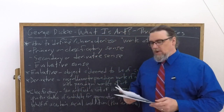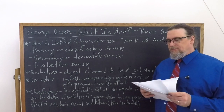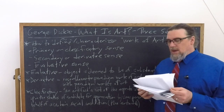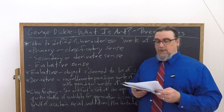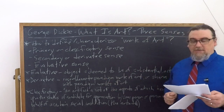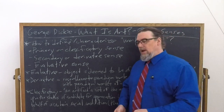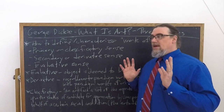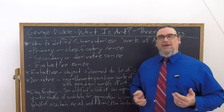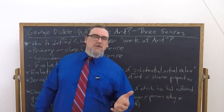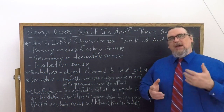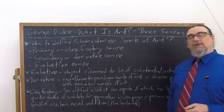Let's look first at what he characterizes as the evaluative sense. He doesn't say an awful lot about it here, but it is definitely worth looking at for just a moment. He says that the evaluative sense is used when the object it is predicated of is deemed to be of substantial actual value. So this is when somebody is saying this is good, or this is beautiful, or using other aesthetic terms like 'this is cool.' Something is of positive and substantive value — that's the evaluative sense of calling it a work of art.